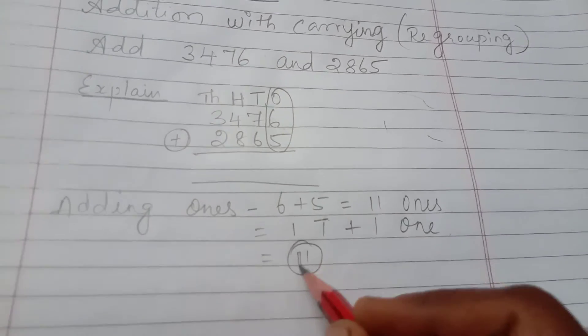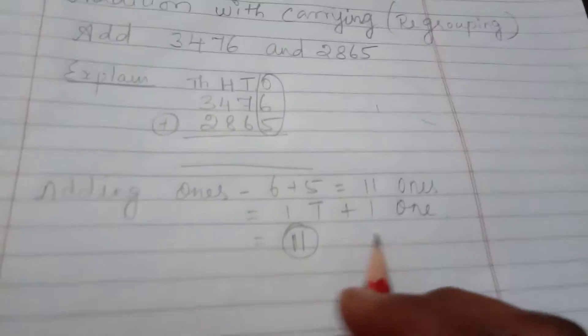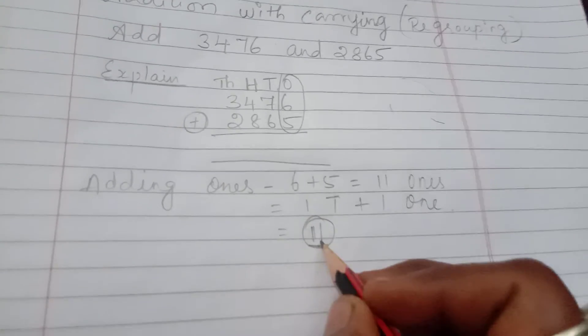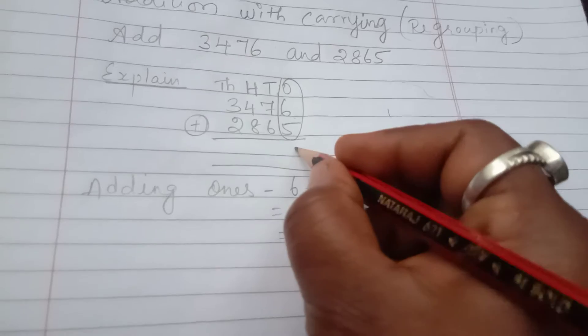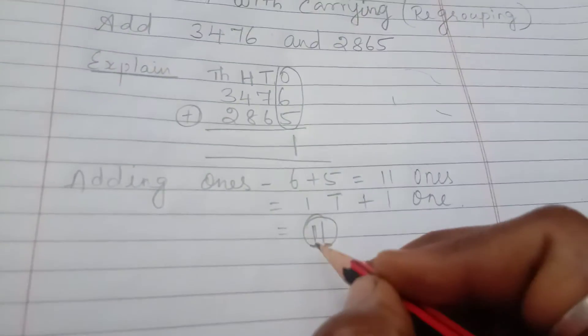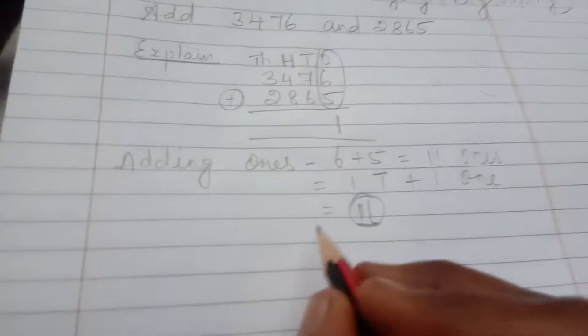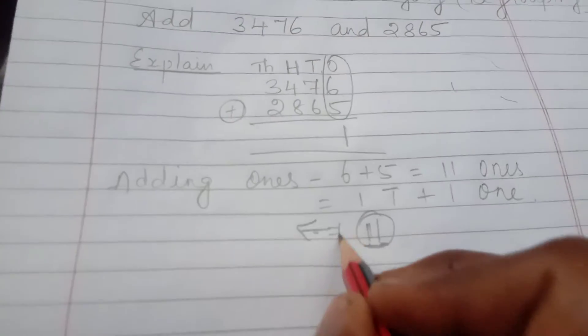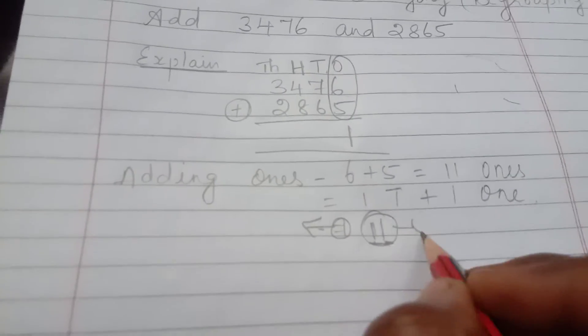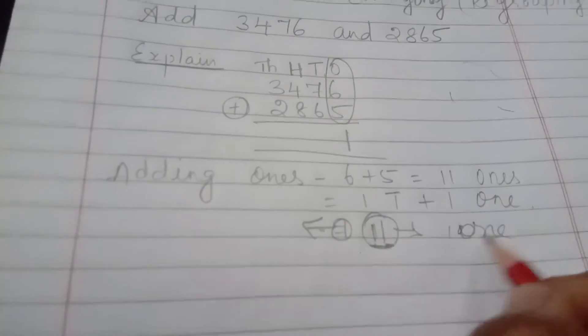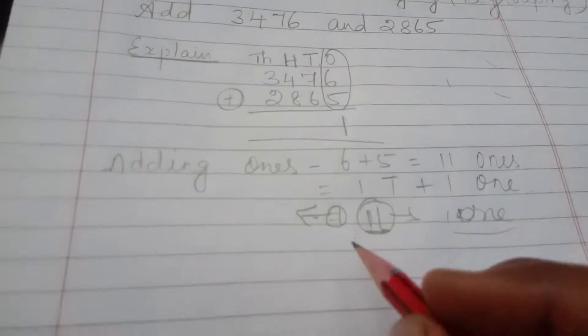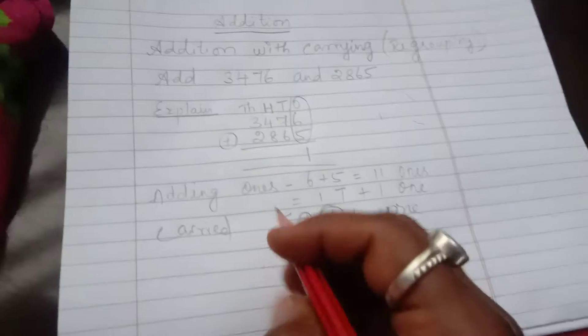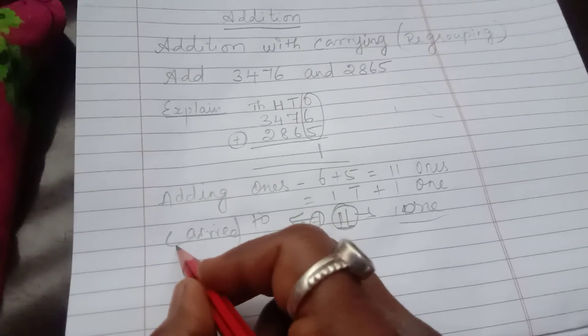This is ones place and this is tens place. So ones place number only we are going to write in ones place. So the another 1 is carried to tens place. Another 1 is carried to tens place.